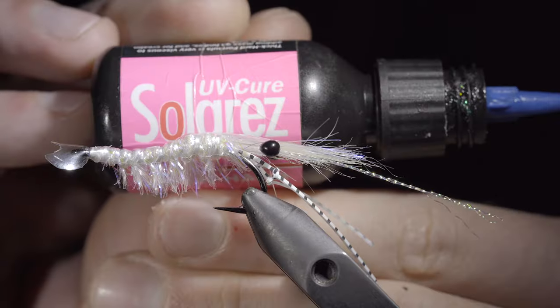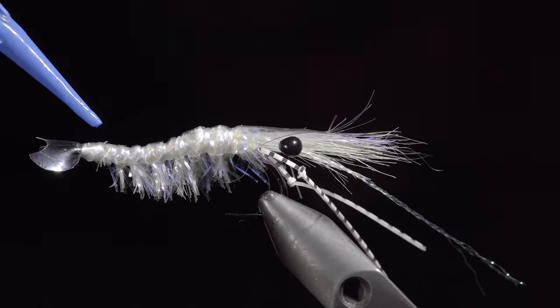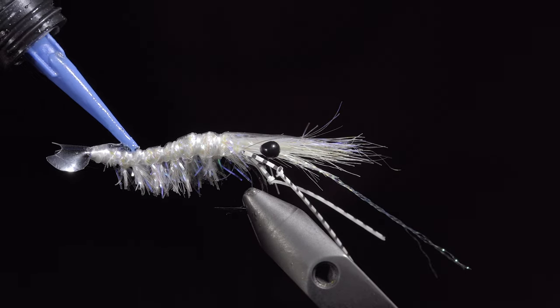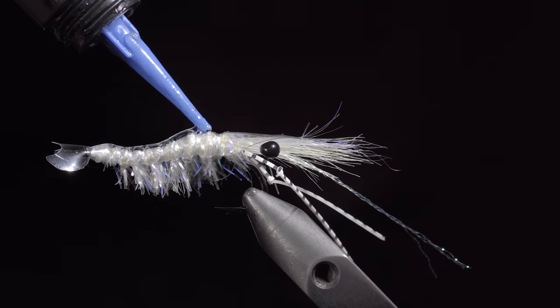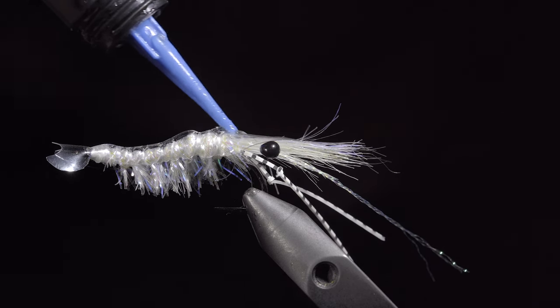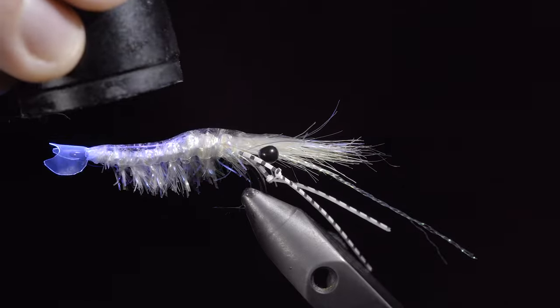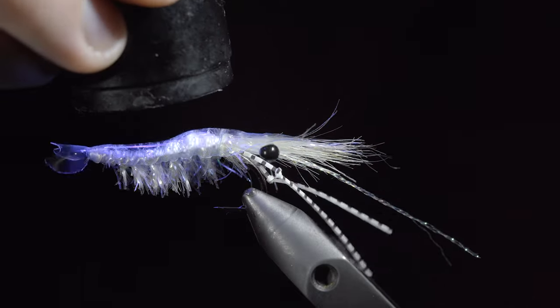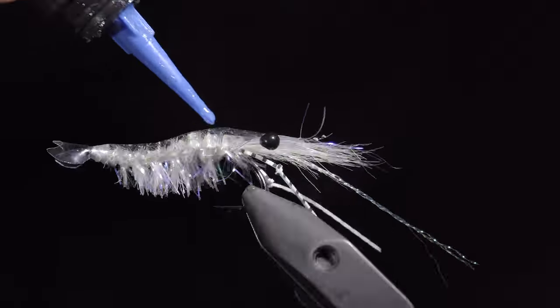Next, we will grab some UV resin. This one in particular is my favorite. Begin adding the UV resin in small layers over the back of our fly and securing it with a UV light. We will continue adding layers until we are happy with the final product.